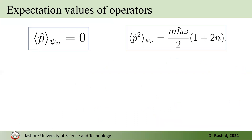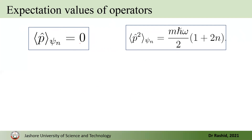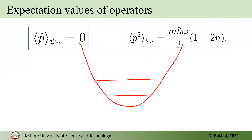Similarly, the expectation value of the momentum operator is zero, and the expectation value of p-squared can be derived — I leave these as homework for students. For the momentum, we can argue that for the harmonic oscillator all states are bounded. Whatever high state you choose, it is always bounded and cannot go beyond a boundary. For bounded states, the momentum expectation value is always zero, because the oscillator remains confined within these boundaries.